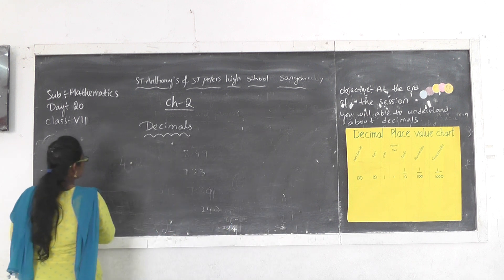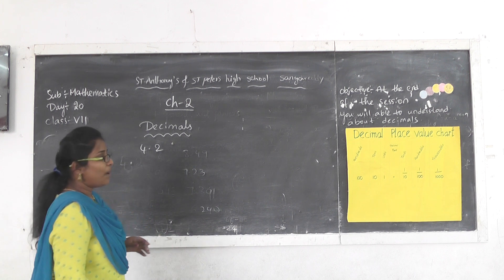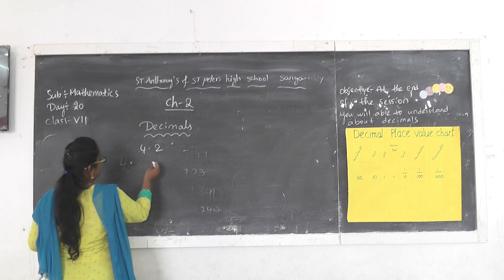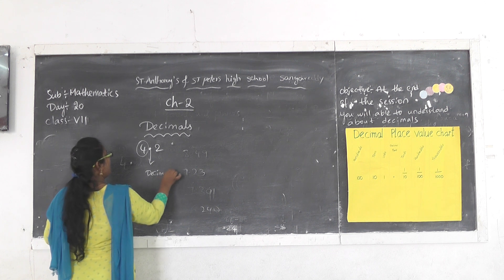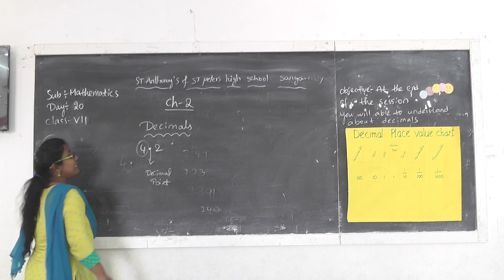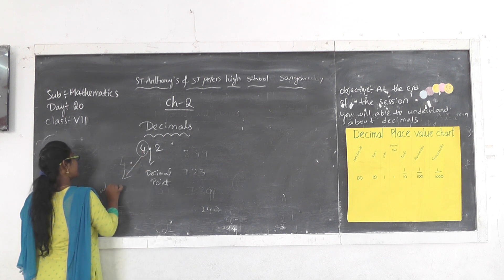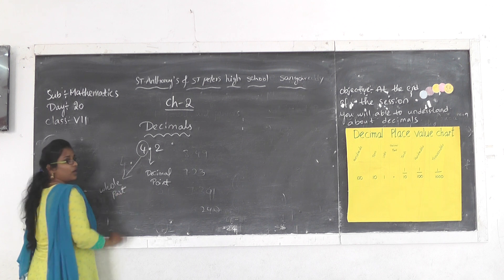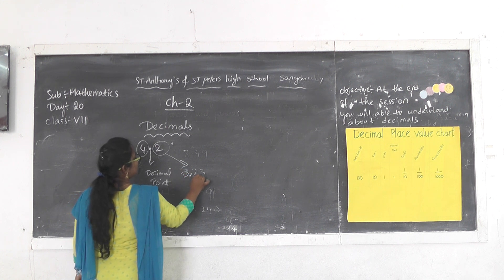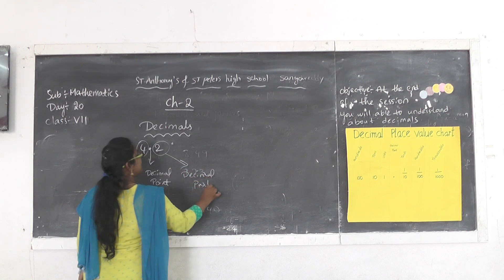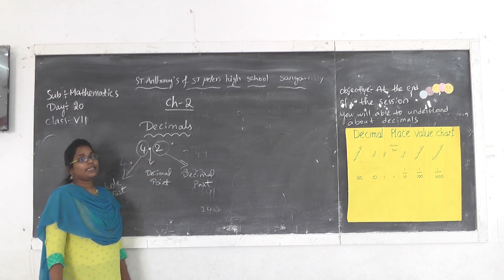Decimal numbers have two parts: the whole part and the decimal part. This is a decimal point. The decimal point left side numbers are called the whole part, and the decimal point right side numbers are called the decimal part.